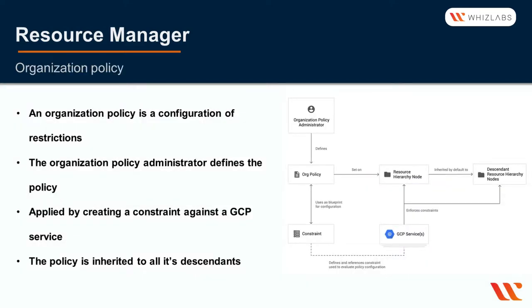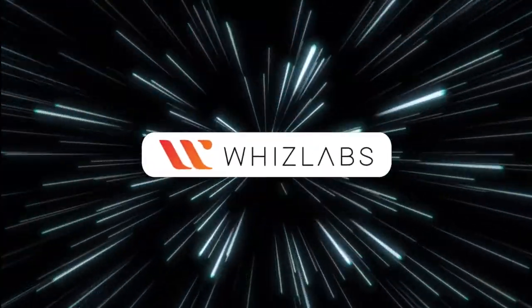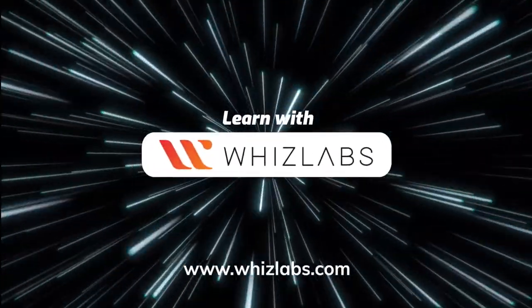An organization policy is a configuration of restrictions. The organization policy administrator defines the policy to enforce these restrictions. The policy is applied by creating a constraint against a GCP service. Once enforced, the policy is inherited by all its descendants. For more details, check the link in the description.